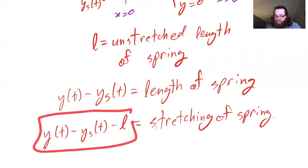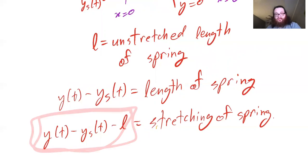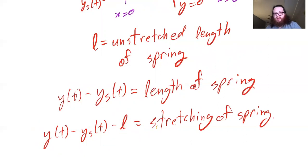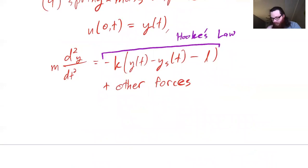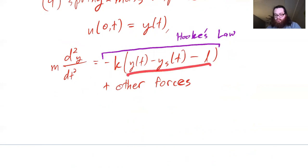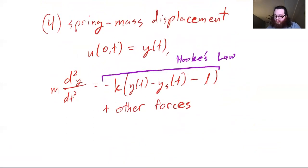That stretching quantity is exactly what we plug into Hooke's law: the force acting on a spring is proportional to its displacement. That's why we're calling this the spring-mass displacement boundary condition.